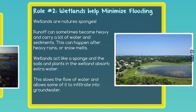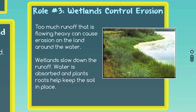That brings us to the third role: wetlands help control erosion. Erosion is the transportation of sediment from one area to another. Too much runoff caused by heavy rains causes a lot of erosion, especially if the water is flowing really fast. Wetlands do a great job of slowing that water down, and the plants found along and inside the wetland have roots that help keep the soil together, so runoff slows down and erosion can be controlled.